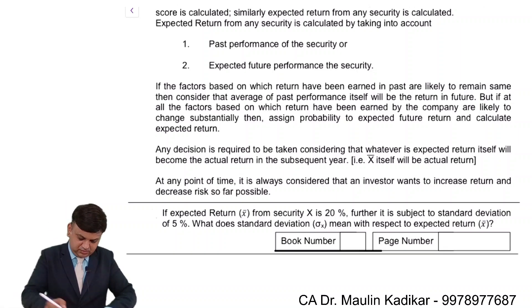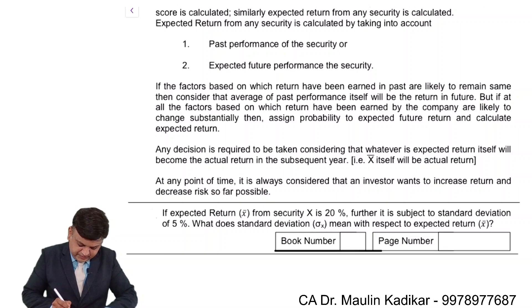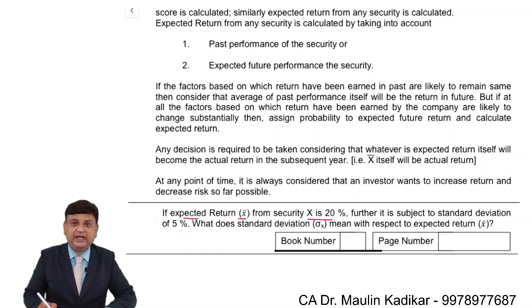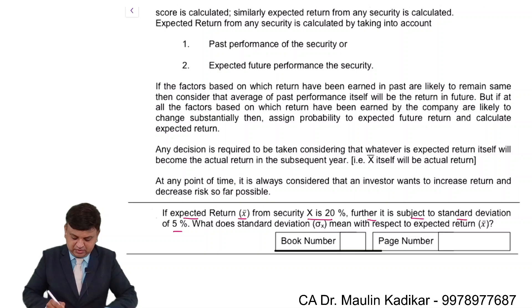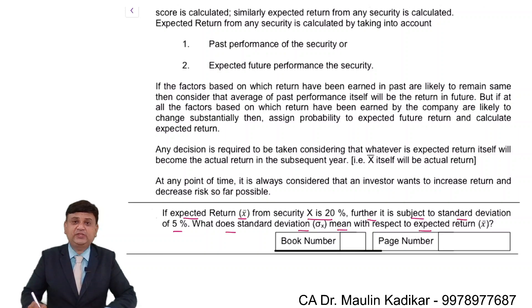Next question. If the expected return — that is, the mean return for a security — is 20%, and it is subject to a standard deviation of 5%, what does standard deviation mean with respect to the expected return?